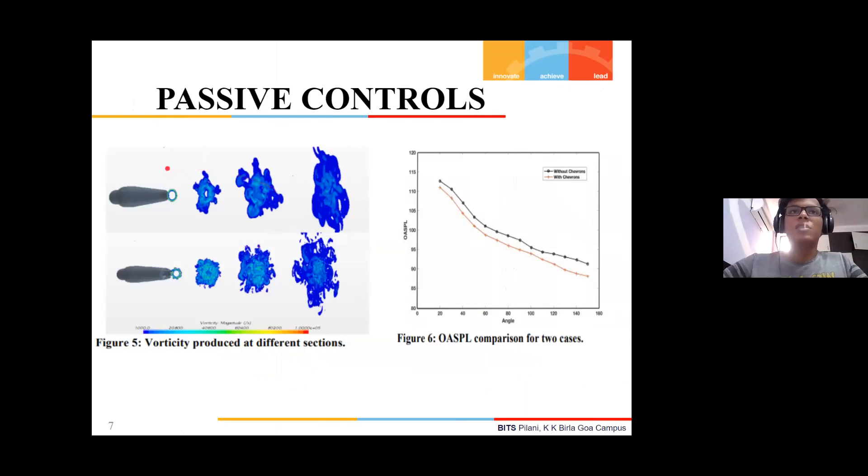In the first image, the above one shows the normal nozzle without any methods at the end, whereas in the second image we have the chevron nozzle. As can be clearly seen in these cross-section plots, there are many counter-rotating vortices in the chevron-based nozzle as compared to the normal nozzle, which has mostly a uniform flow.